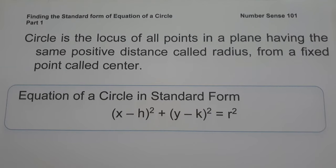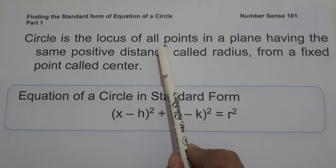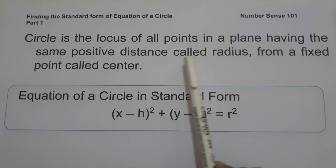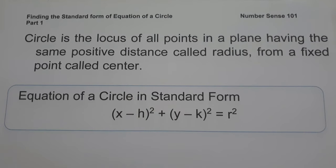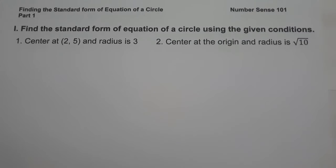For today's video we are going to have the first part of our discussion on how to find the standard form of equation of a circle. A circle is a locus of all points in the plane having the same positive distance called radius from a fixed point called center. The standard form of equation of a circle is: quantity (x minus h) squared plus quantity (y minus k) squared equals r squared. These are the basic concepts you need to remember in order to write the standard form of equation of a circle.